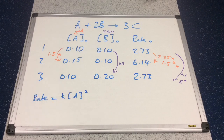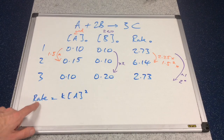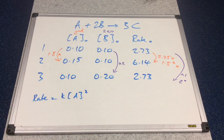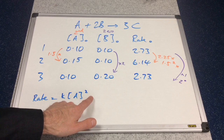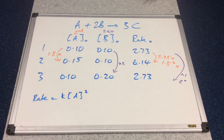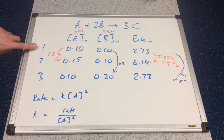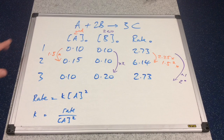So we've got a nice simple rate equation: rate equals k multiplied by the concentration of A squared. We don't need to include B because anything to the power 0 is 1, so we leave that out. That rearranges to give k equals rate divided by concentration of A squared. Using row 1 — remember it doesn't matter which row since temperature is constant — gives the same value for k.